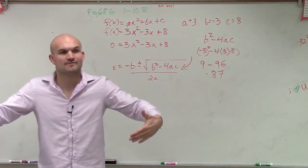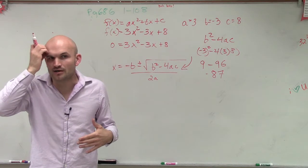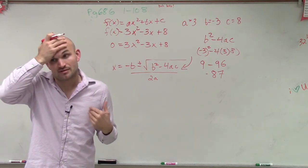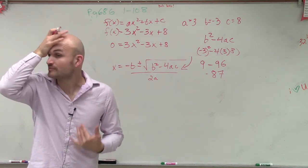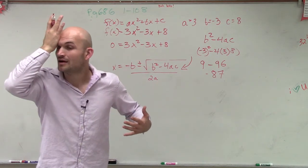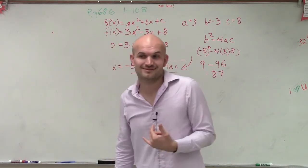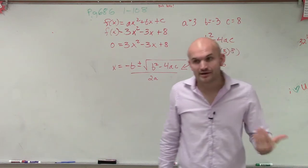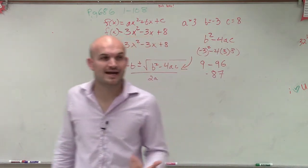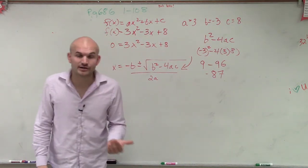When you take the square root of a negative number, you produce what type of number? The square root of a negative number is going to produce what type? It's going to be imaginary. Anytime you're taking the square root of a negative number, you're going to have imaginary roots.